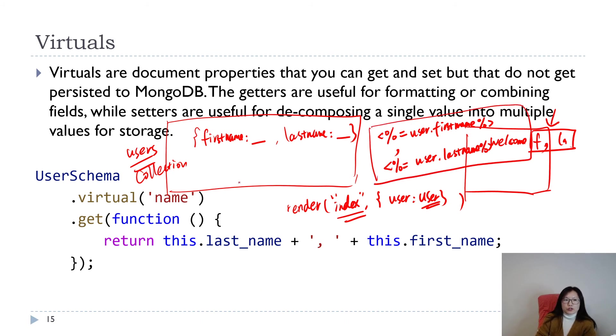Another way is to use virtuals. Virtuals are document properties that you can get and set but you do not have to persist into your database. Here we have the virtual which is the name. This name attribute won't be persisted into your database. You only have first name and last name. Name is transient to your database, but in your template you can still use get and set method.